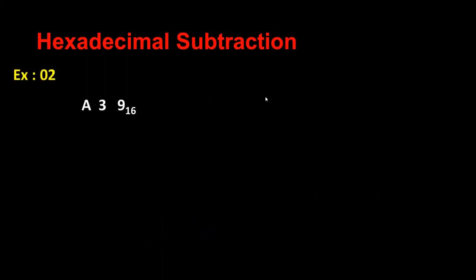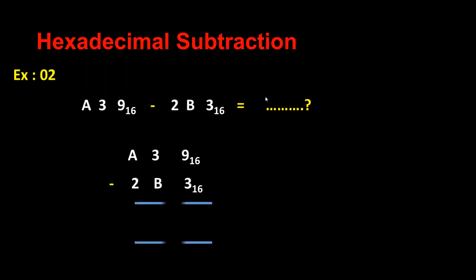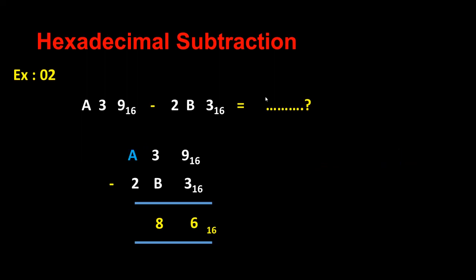Now: A 3 9 minus 2 B 3. What is the value? 9 minus 3 answer is 6. But I can't do 3 minus B, so I'm taking 1 from there: 16 plus 3 is 19, minus 11 (which is B) answer is 8. But here I don't have enough — I have 2 minus 1 because I previously sent 1 to the previous calculation. So now I have 7. So the final hexadecimal subtraction answer is 7 8 6.